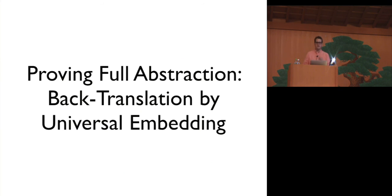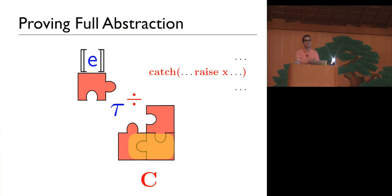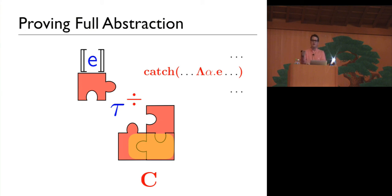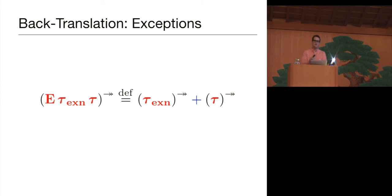We did a good job designing our type translation, so it seems plausible that we are fully abstract — but now we need to actually construct this back translation in order to prove it. This is our technique, which I call universal embedding. At the boundary with source code, these programs act like source programs: they don't raise exceptions into compiled programs and they use the right values. But internally, to implement that interface, they might use features the source language doesn't have — raising exceptions only to catch them, or constructing and instantiating polymorphic code. We can use the sums of the source language to encode exceptions: raise is an in-left, a successful value is an in-right, and we can use case analysis to implement a catch.